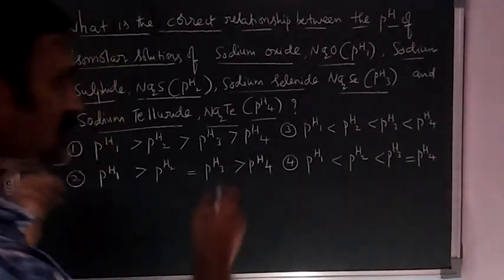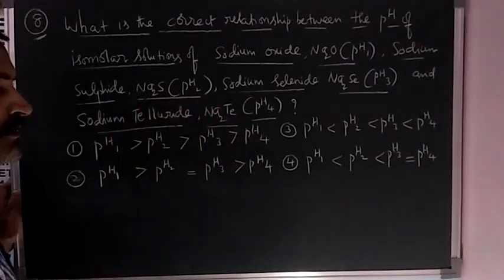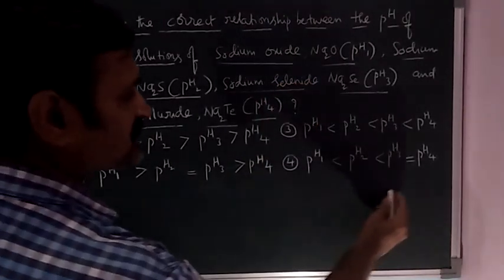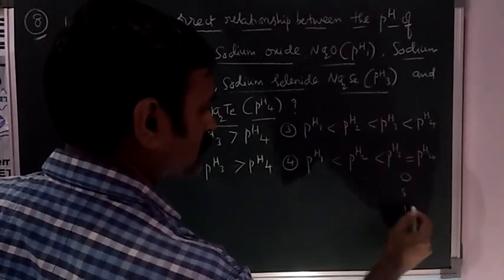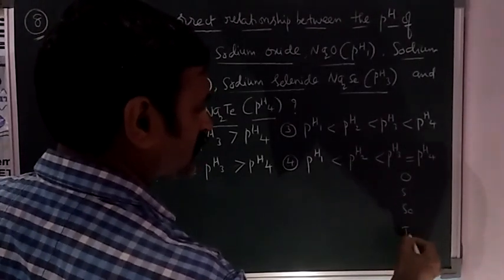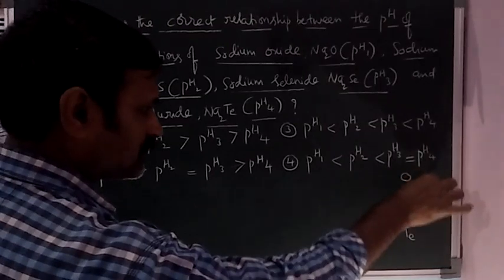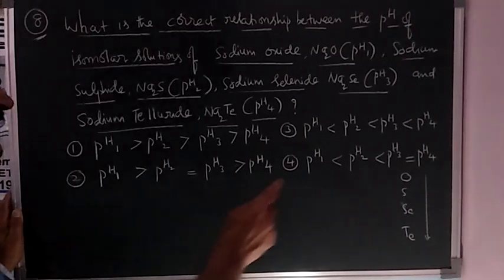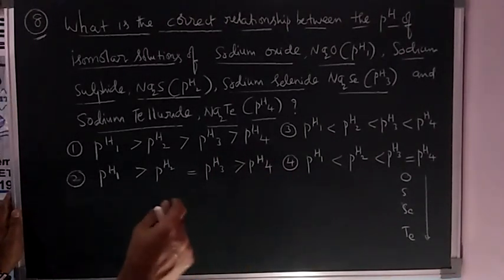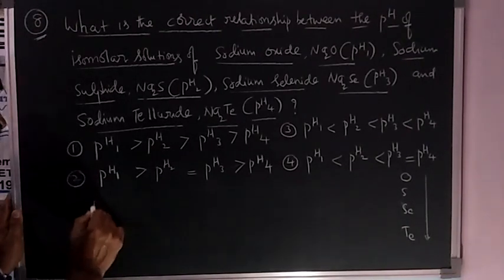If you observe these compounds - sodium oxide, sulfide, selenide, and telluride - they are all from sixth group elements: oxygen, sulfur, selenium, and tellurium. In this direction from top to bottom, the size of the elements increases. If you identify such things, you can easily understand one more point of discussion.